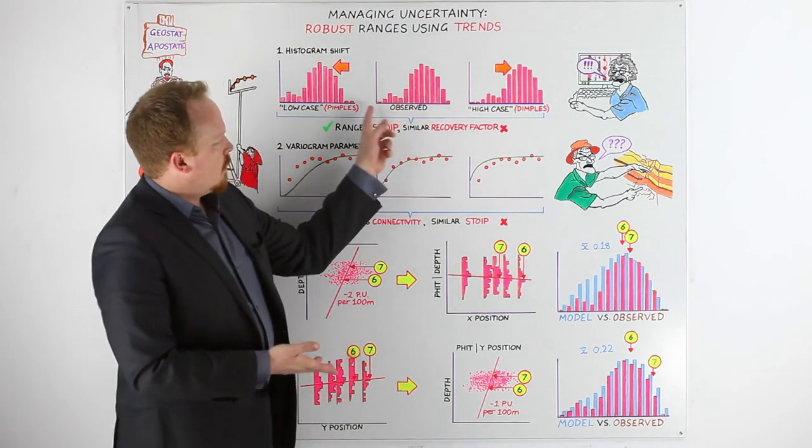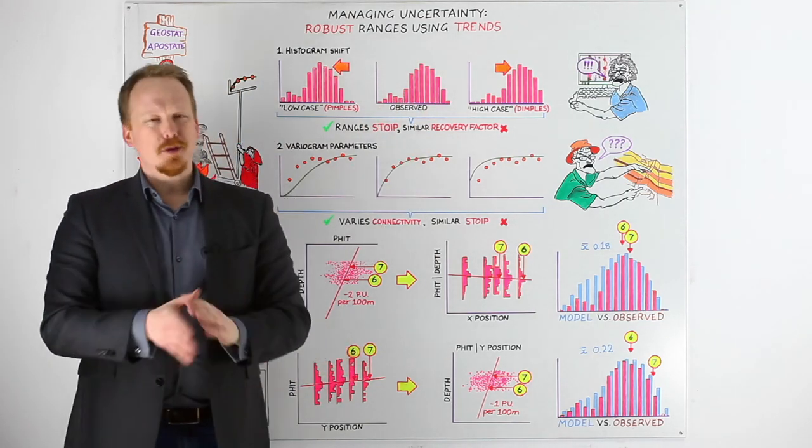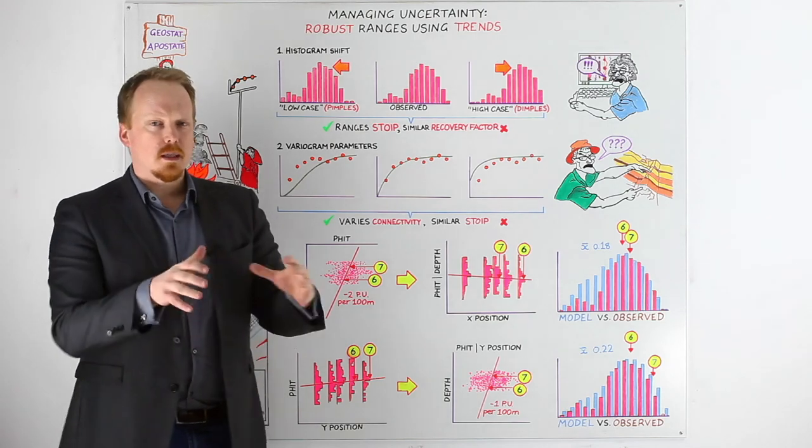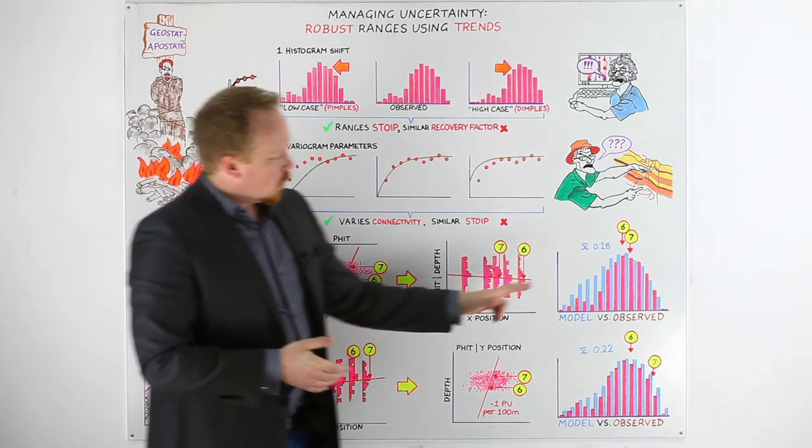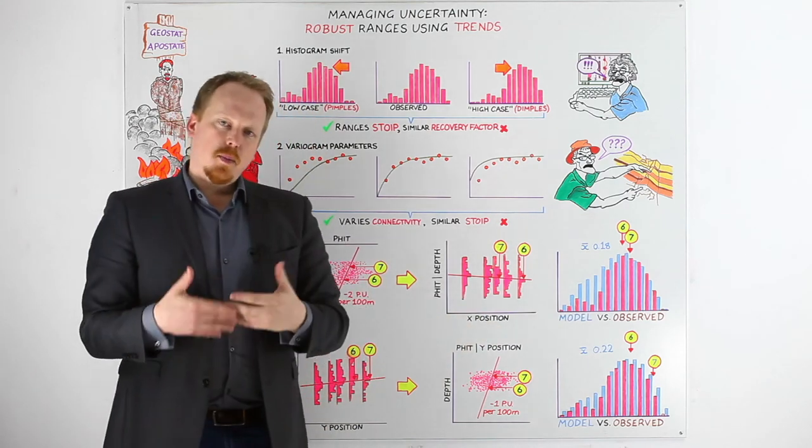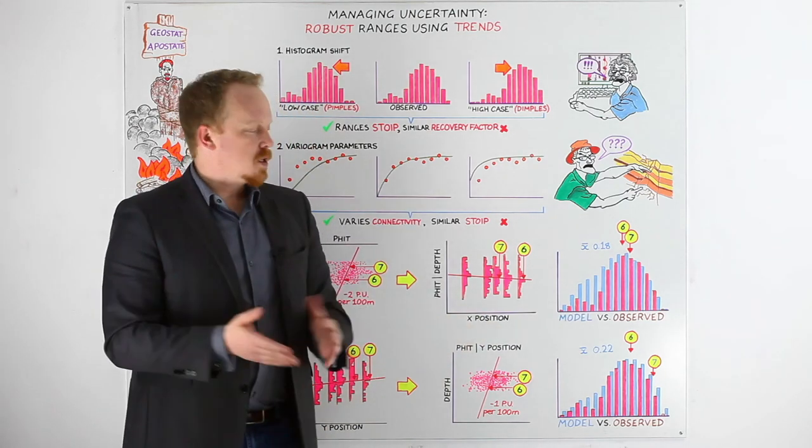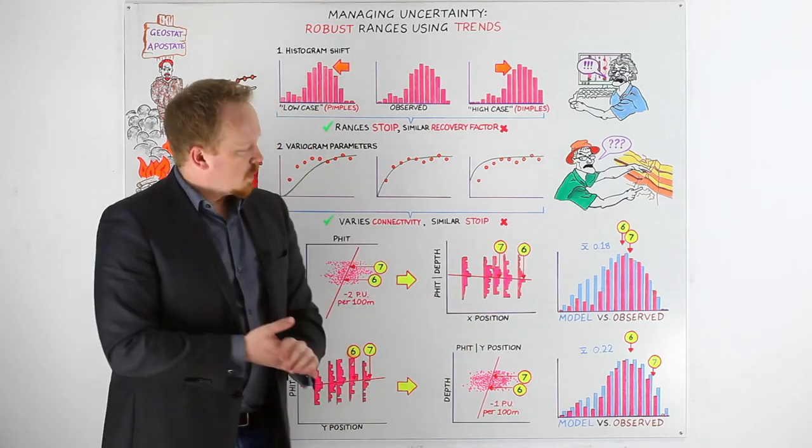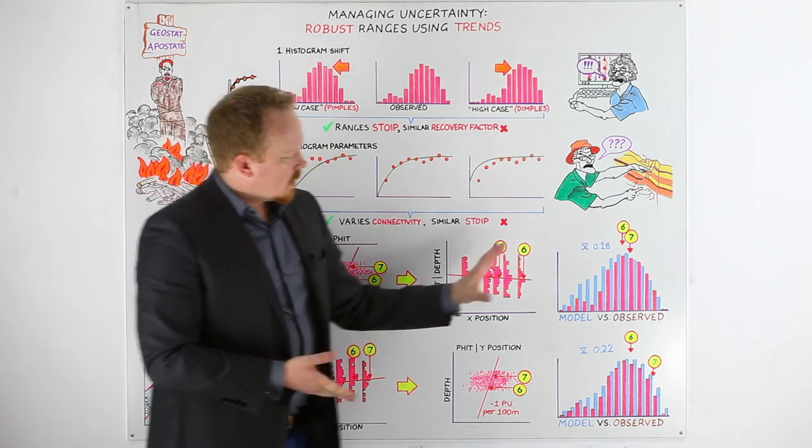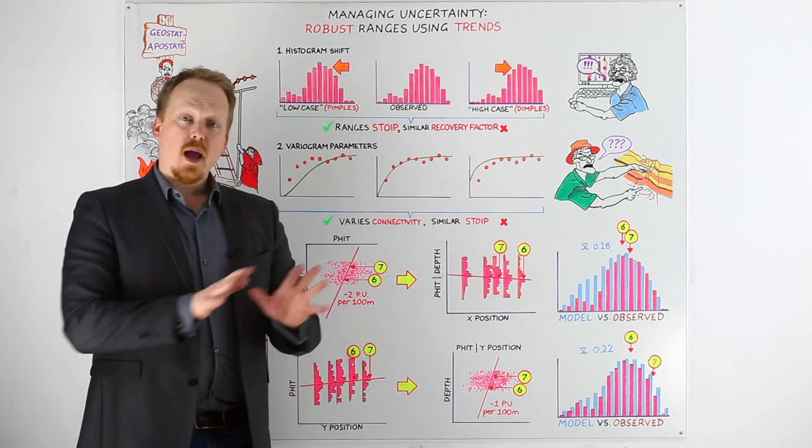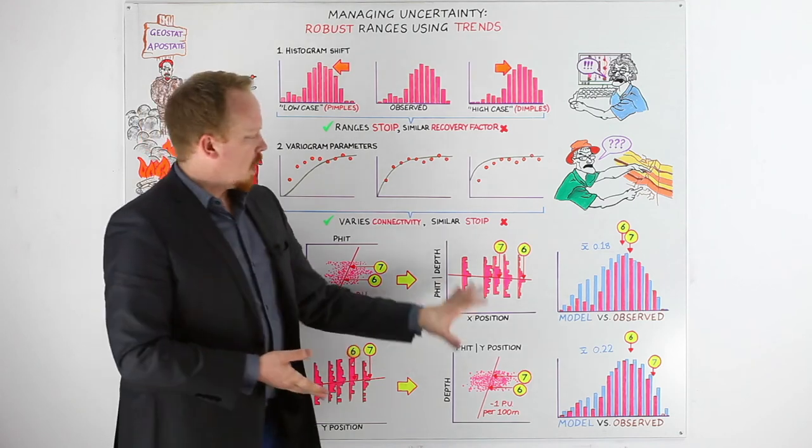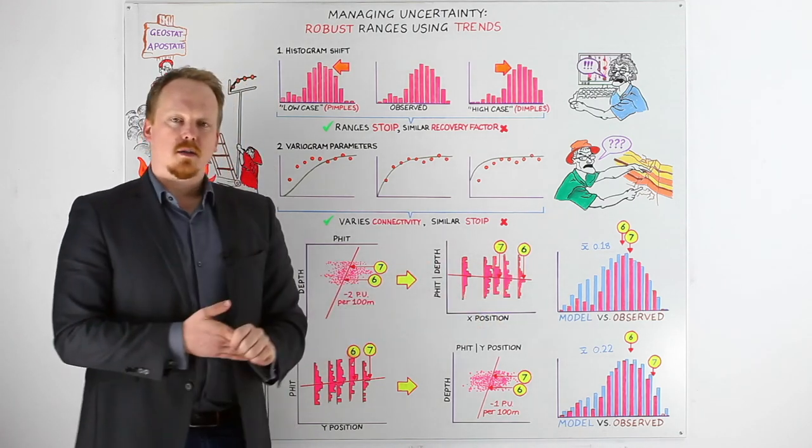This input histogram with that particular shape is more to do with the sampling of your wells in the particular locations that they were, whereas this trend model behind it is helping you understand is there any variation in three-dimensional space that's going on. So we can end up with very different plumbing and in-place structures by really investigating how these trends can go.